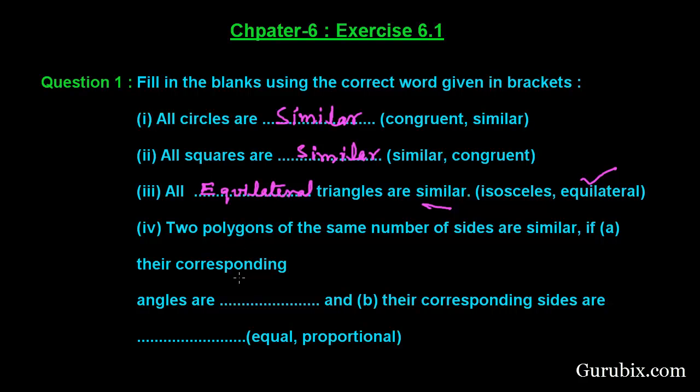And in fourth part, we are given two parts. Two polygons of the same number of sides are similar if their corresponding angles are equal, so we shall write here equal, and their corresponding sides are proportional. So this is what we have filled in the blanks. This is the solution of the question. Thank you.